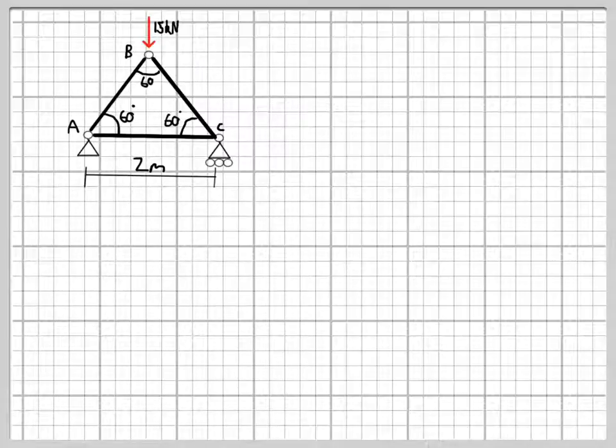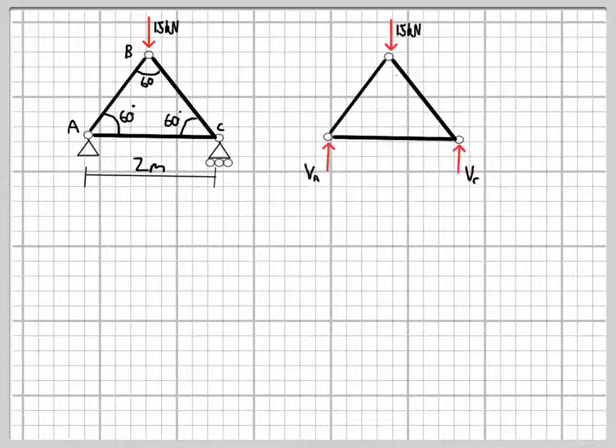As with many problems of this type, it's best to start by determining the support reactions in exactly the same way as in earlier examples. We can do this fairly quickly by drawing a free body diagram and noticing that the support on the left is a hinge and therefore has two support reactions, and the support on the right is a roller with just one support reaction.